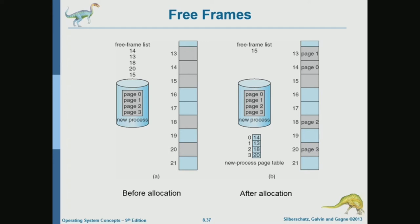In the page table, which maps pages to frames, it records that page zero is in frame 14. For page one, we pick the next frame, which is frame 13. Frame 13 in physical memory holds page one of that process. Same for pages two and three — each goes into the next frame in the free frame list. After this, only frame 15 remains free, and the page table is set up with a frame for each page.